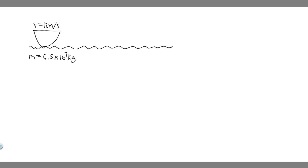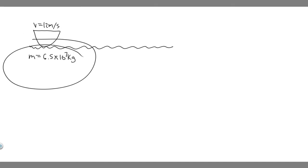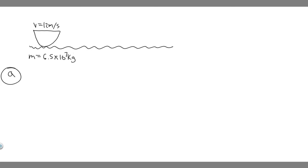Let's go ahead and solve this problem. I went ahead and drew what's going on — we have this ship traveling at 12 meters per second, and this is its mass. Let's start with part A: we're trying to find the ship's kinetic energy at this time. The formula for kinetic energy is one half mv squared.